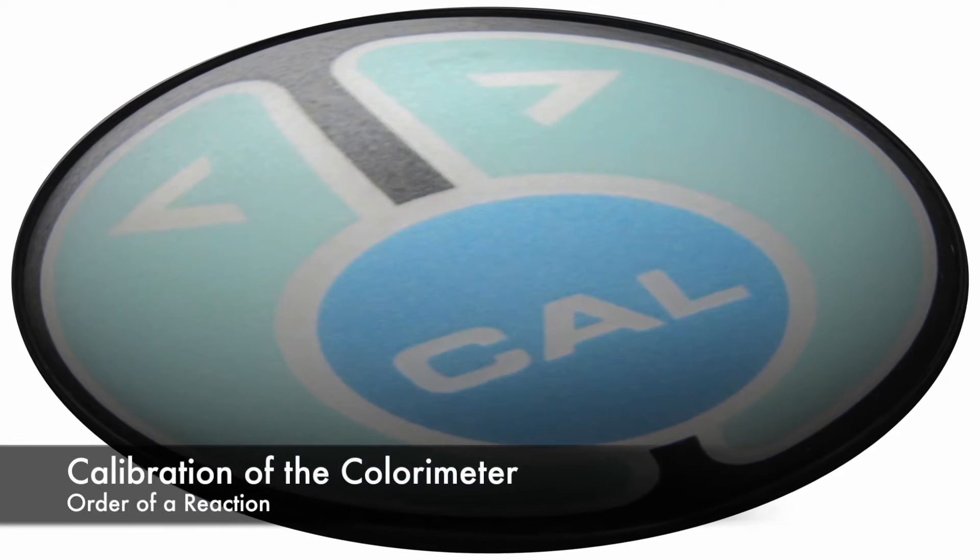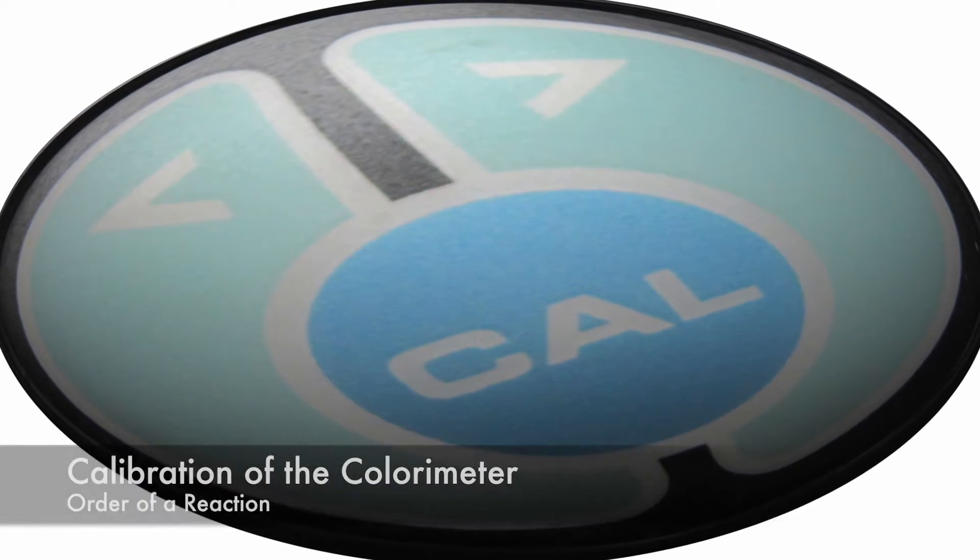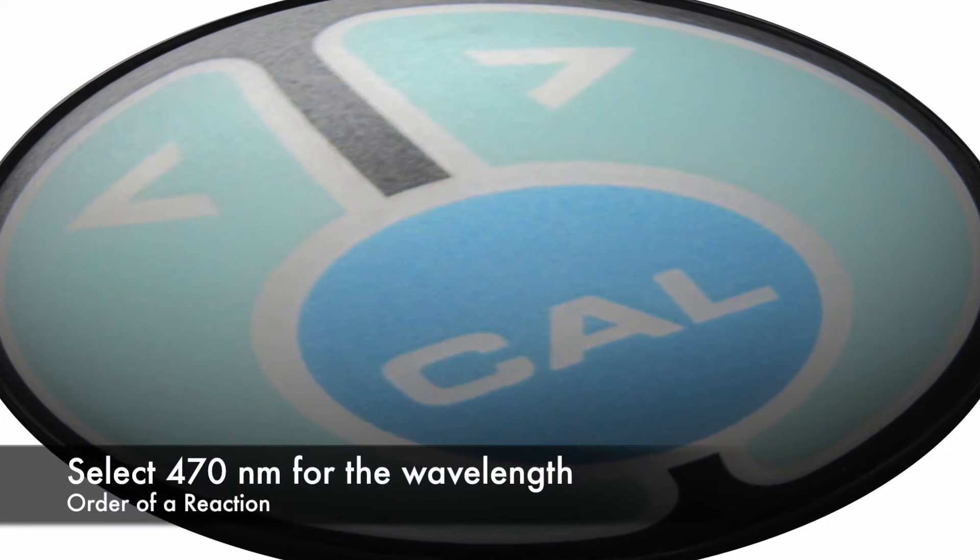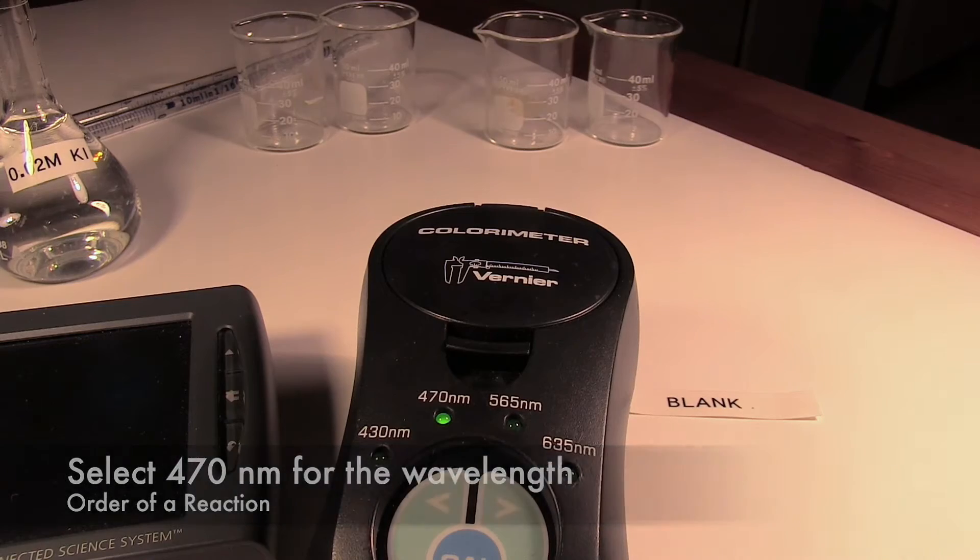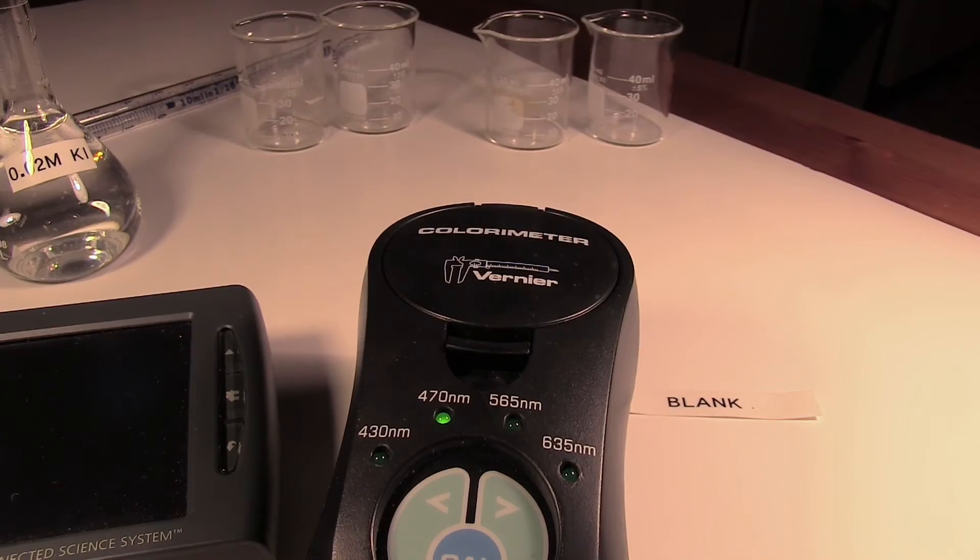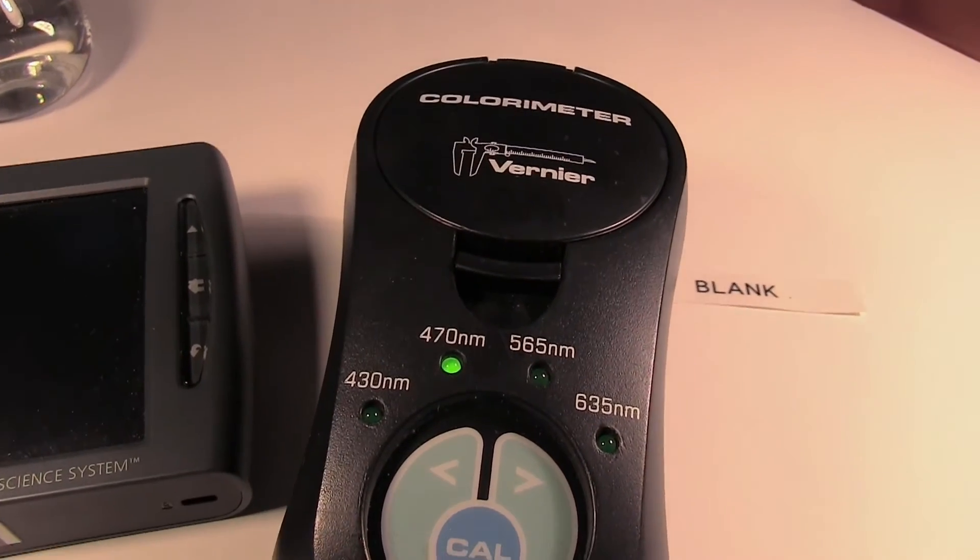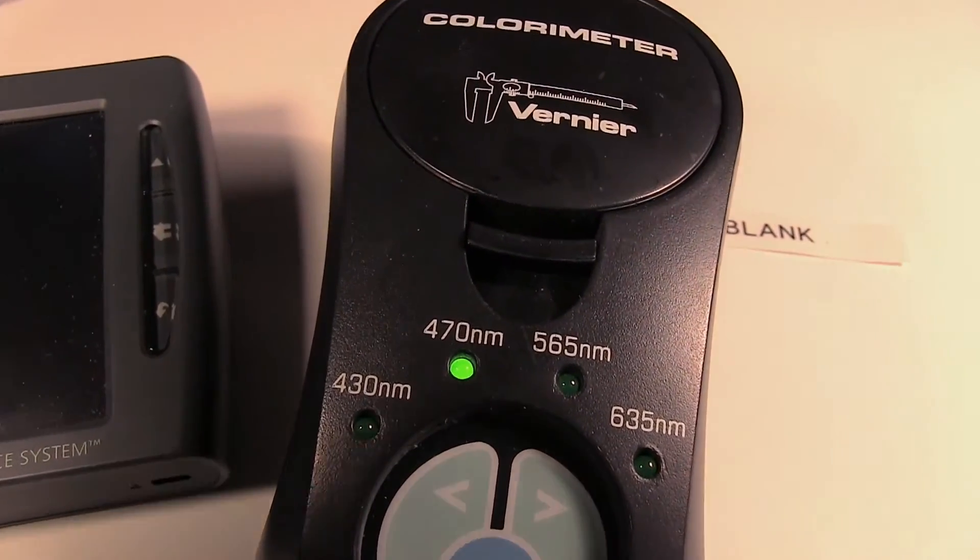First we will calibrate the colorimeter. Select the wavelength, in this case it is 470 nanometers. If not already selected, use the left and right arrows to select the correct wavelength.